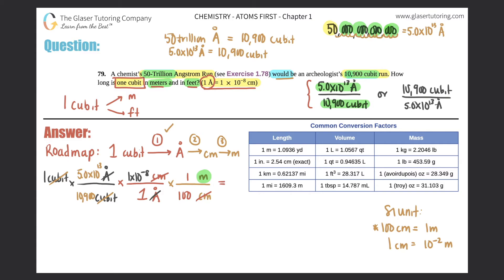So when you get the top: 5 times 10 to the 13th times 1 times 10 to the negative 8th, you get 5.0 times 10 to the - let's see - 1, 2, 3, 4, 5. Divided by 10,900 times 100 is 1.09 times 10 to the 1, 2, 3, 4, 5, 6. And now we can divide the two numbers. So 5 times 10 to the 5th divided by 1.09 times 10 to the 6th, and you get 0.4587.